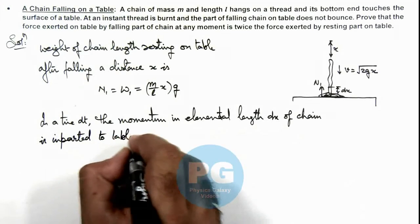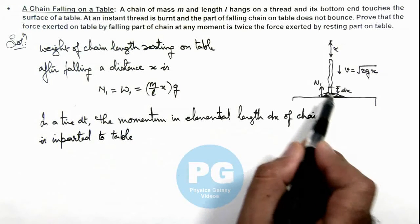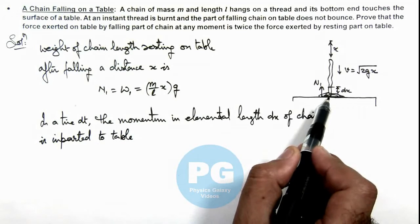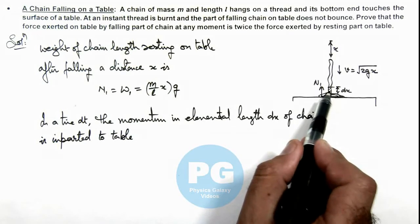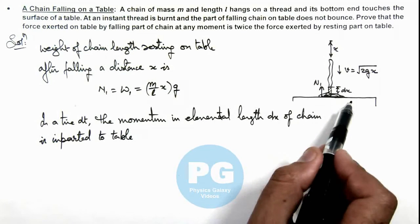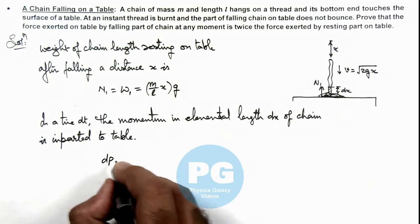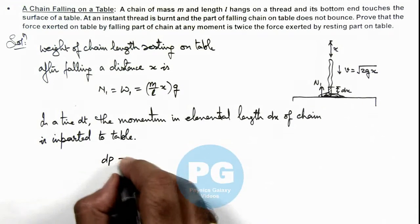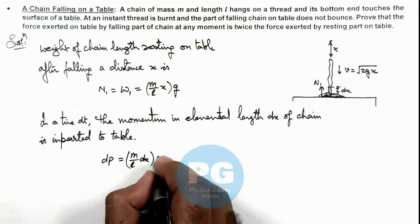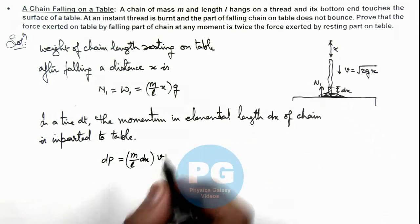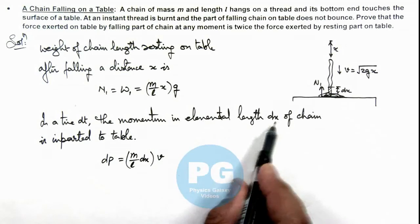Because we are given that when a part of chain strikes the table it does not bounce, that means the momentum contained in this dx length will be imparted to table after falling. So this momentum dp which is there in the dx element is m/l multiplied by dx multiplied by v. So this is the momentum of this elemental length dx.